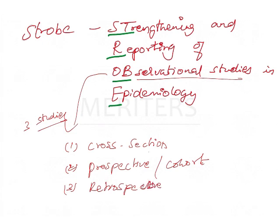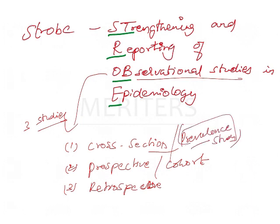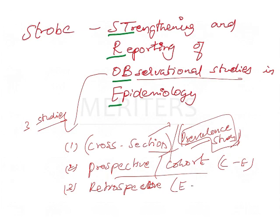Cross-sectional studies are also known as prevalence studies — you estimate the number of people affected by a disease at a point in time, with no follow-up. Prospective studies are cause-to-effect, a forward-going study. Retrospective studies are effect-to-cause, a backward-going study.